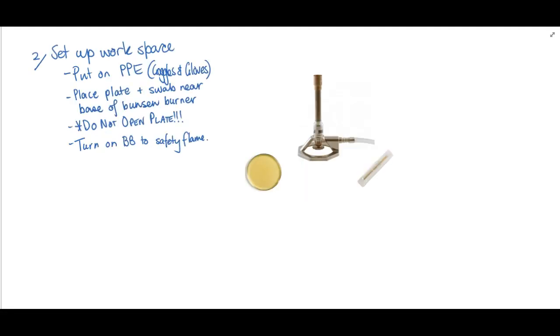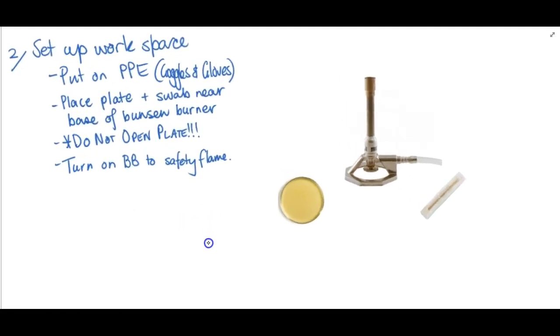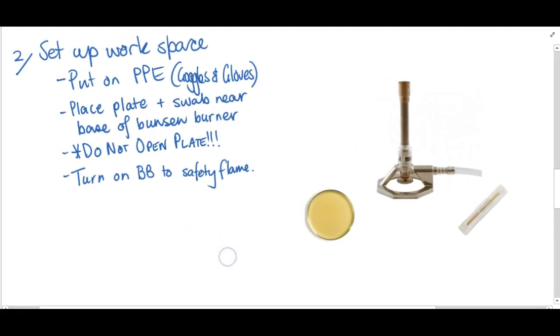Next thing you've got to set up your workspace. This is very important. If you don't do this properly, you're going to allow other microbes to get into your plate and then you'll have a contaminated sample. The very first thing you have to do is put on your PPE, your gloves and goggles, and make sure that you put your plate and your swab below your Bunsen burner on the bench. There shouldn't be more than about 20 to 30 centimeters distance.